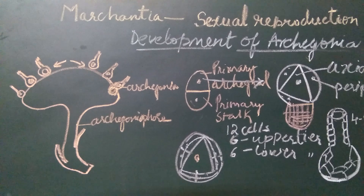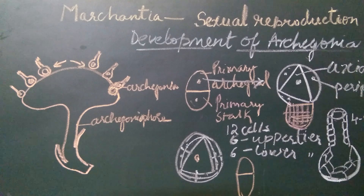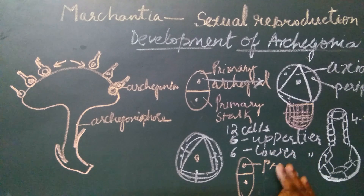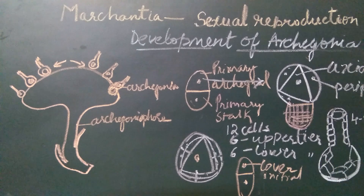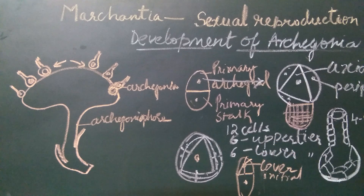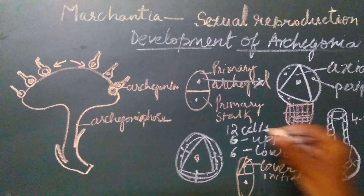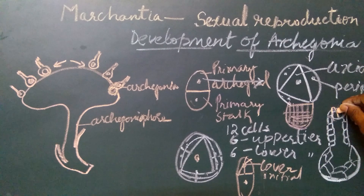Simultaneously, division also takes place in the central axial cell. The central axial cell first divides by a transverse wall, resulting in the formation of an upper cell and a lower cell. The upper cell is called the primary cover cell, or the cover initial. This cover initial divides twice vertically — the second division at right angles to the first — resulting in the formation of four cells. These four cells occupy the tip of the neck, forming the four cover cells of the neck.